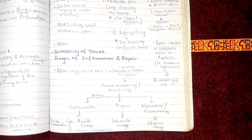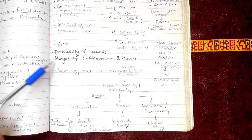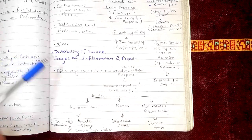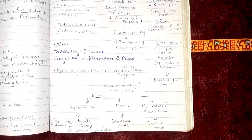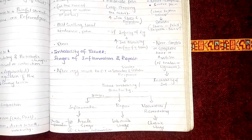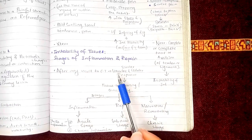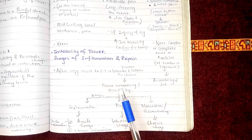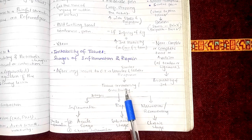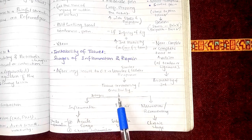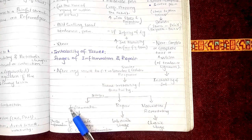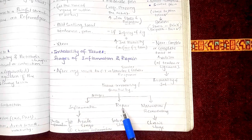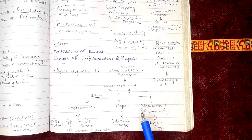The next topic is irritability of the tissues, where we discuss the stages of inflammation and repair. After any insult to the connective tissue, there is a similar vascular and cellular response, and these responses contribute to tissue irritability and sensitivity. Tissue irritability or sensitivity is characterized in three stages: inflammation, repair, and then maturation and remodeling.